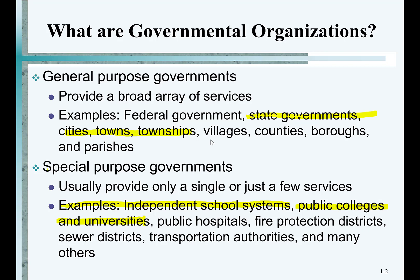There's something called special purpose governments. Counties and cities are general purpose governments because they do a lot of things — public safety, culture and recreation. Special purpose governments have a singular special purpose. For example, the special purpose of a school district is education. General purpose governments like cities, counties, and states have more than just that singular purpose.